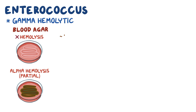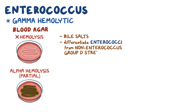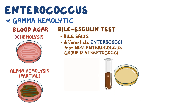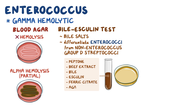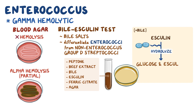Enterococcus can grow on bile salts, which is very useful to differentiate enterococci from non-Enterococcus group D streptococci. This can be demonstrated with a bile esculin test, done on tubes or plates, using a medium that contains peptone, beef extract, bile, esculin, ferric citrate, and agar. In the presence of bile, enterococci can hydrolyze esculin into glucose and esculitin.